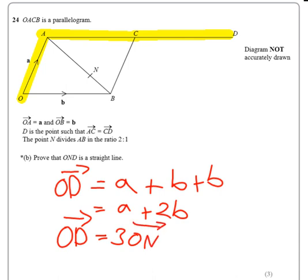Hence, it has to be a straight line because it is a multiple of the other vector and it goes through that point. So you need to have that written down to get the full marks.